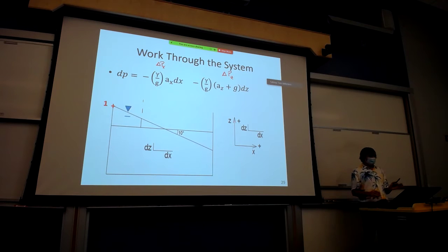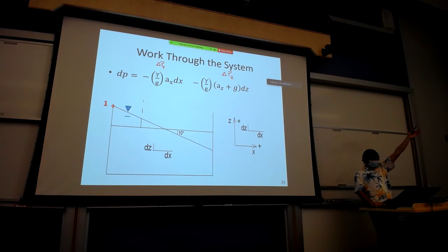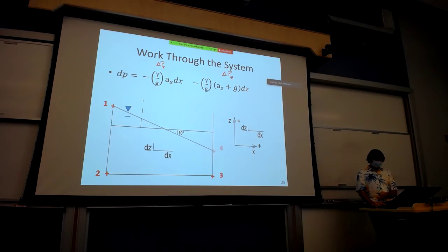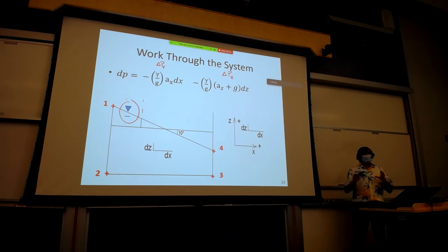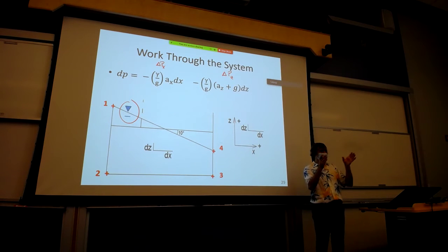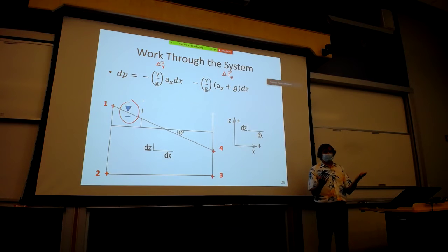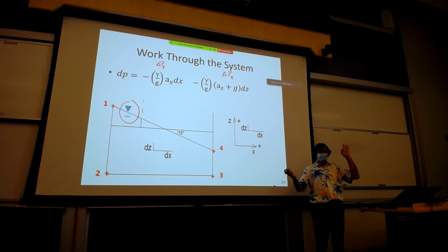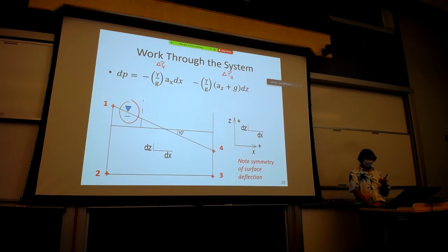We can look at four points in this system: point one is the upper left-hand side, point two is directly below it on the left-hand side, point three is the bottom of the right-hand side, and point four is on the upper right-hand side. With an open container and a free surface, P1 is atmospheric — zero. P3 is also zero. Note the symmetry: it goes up on the left the same amount it goes down on the right.